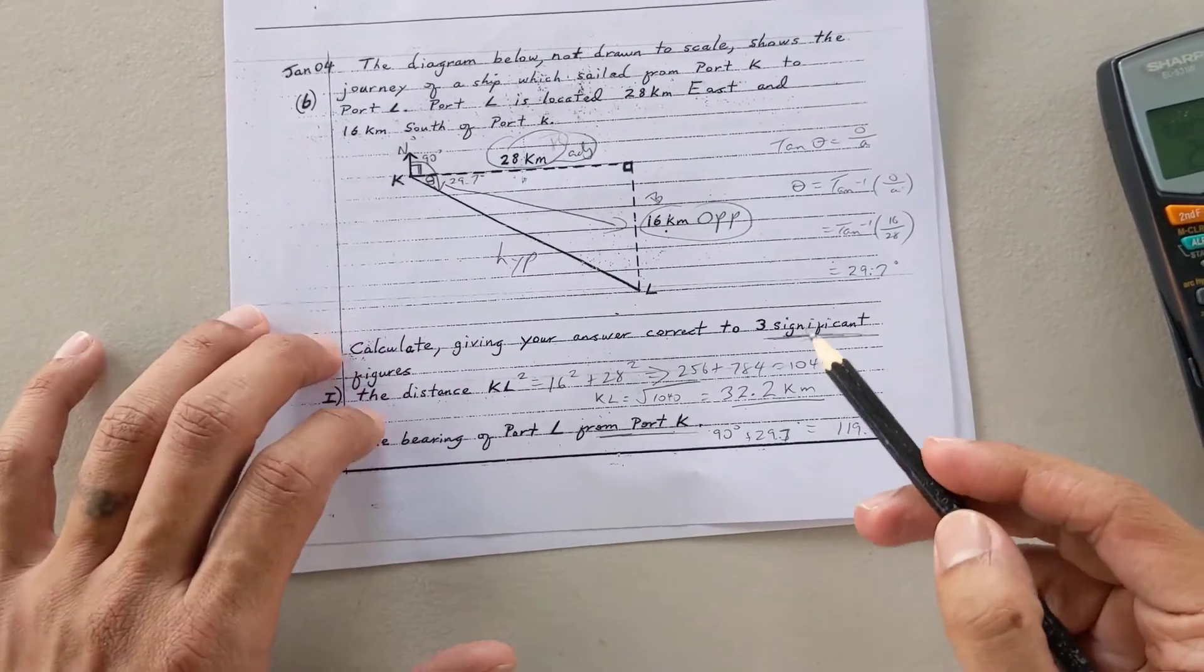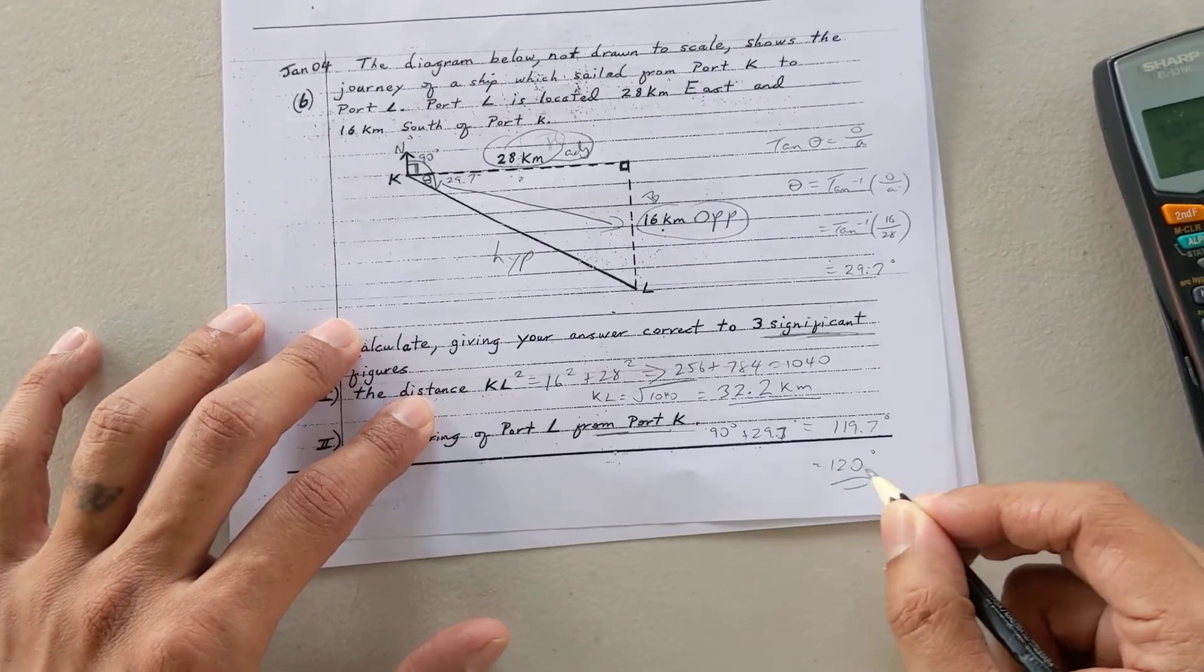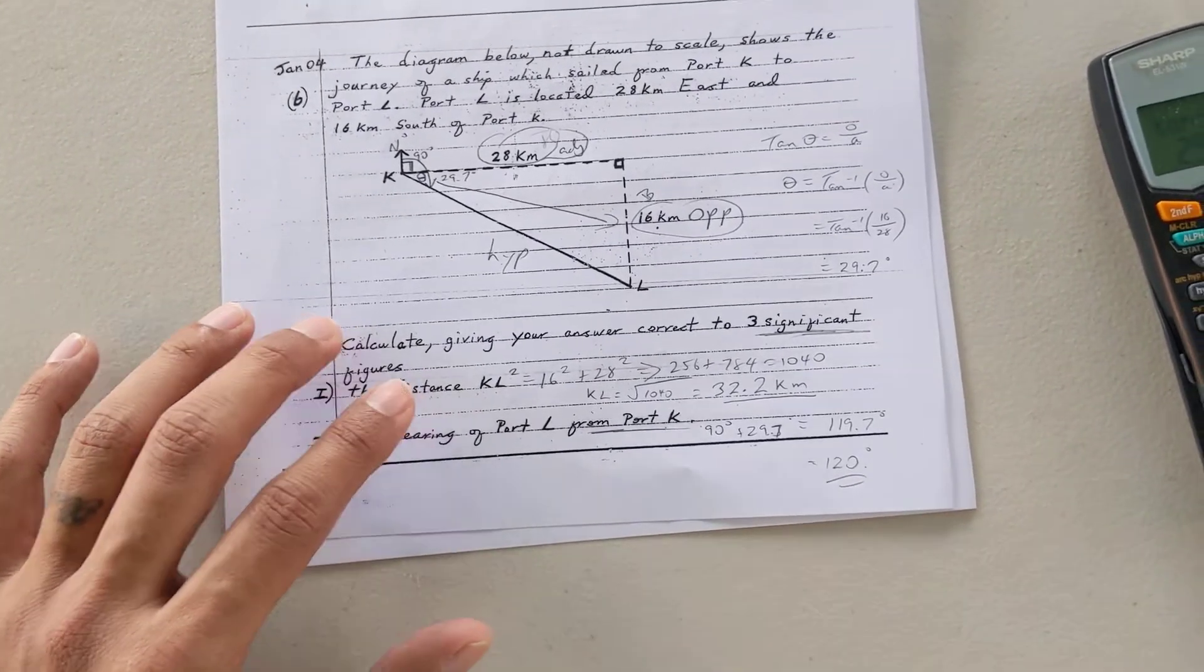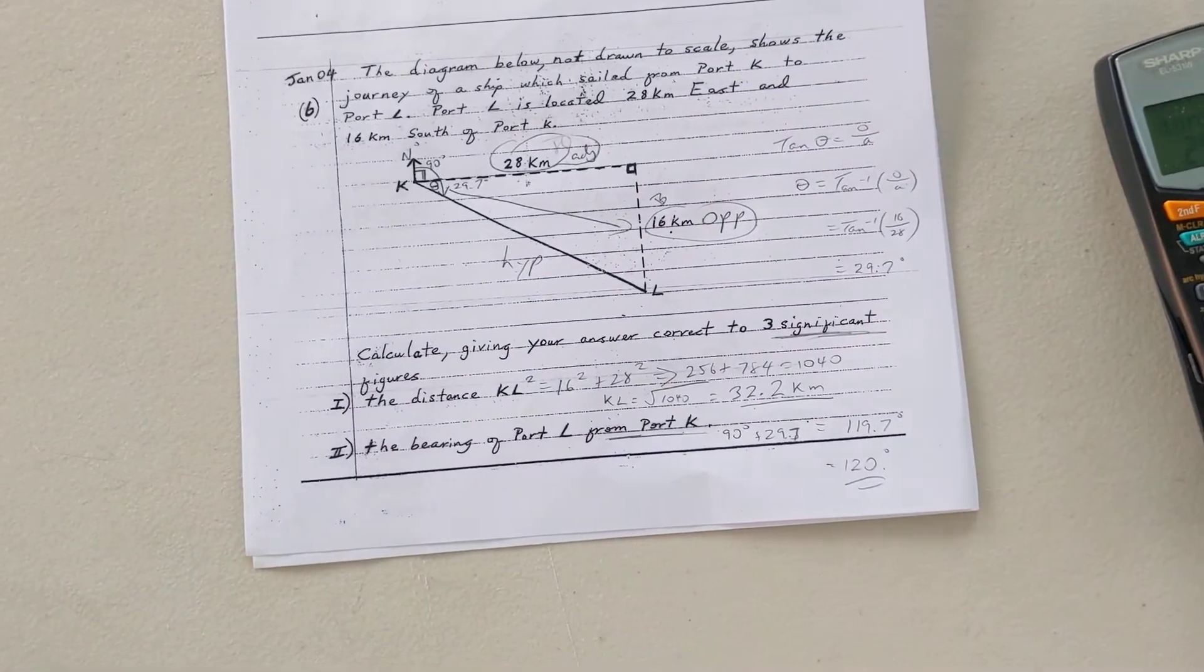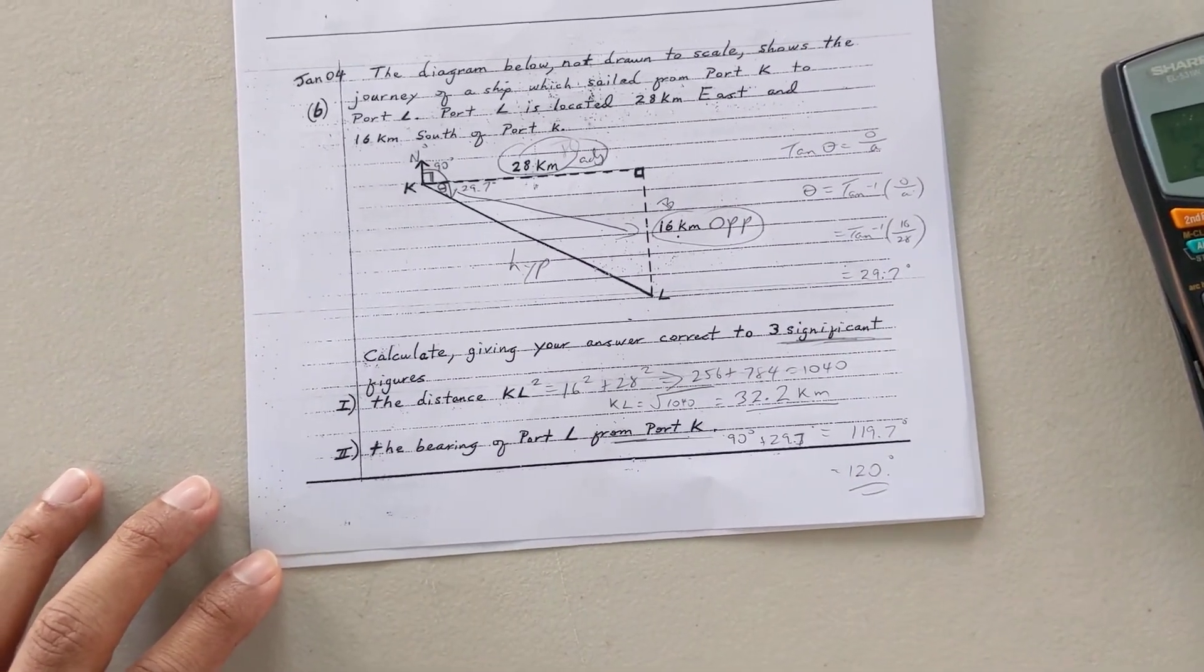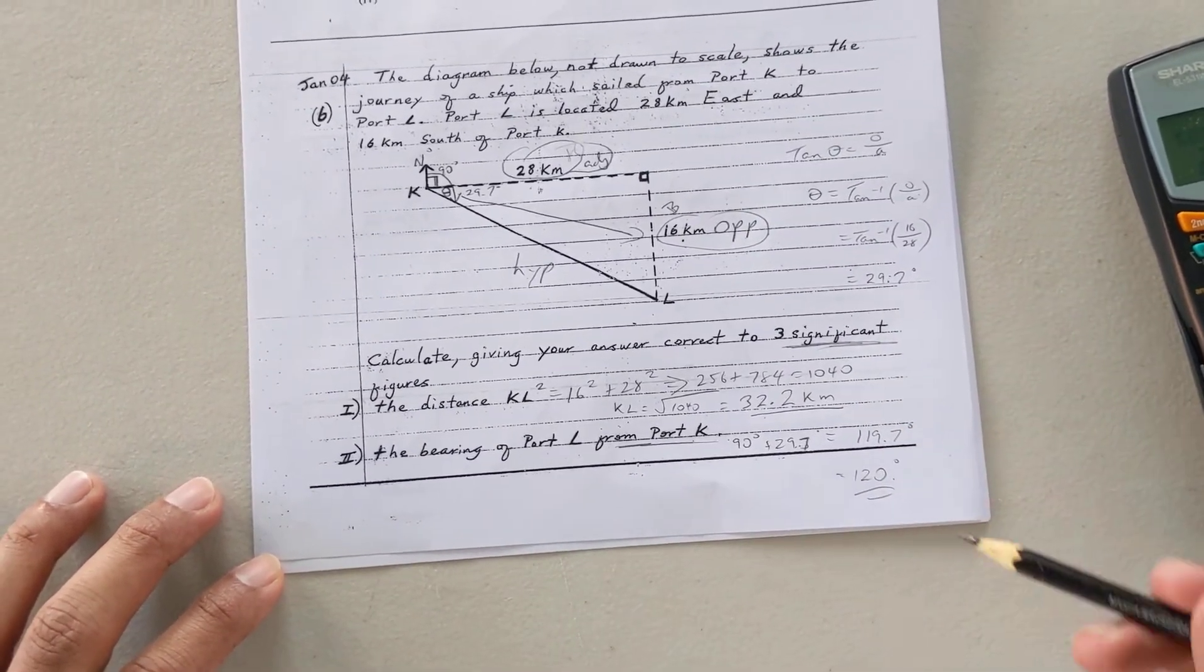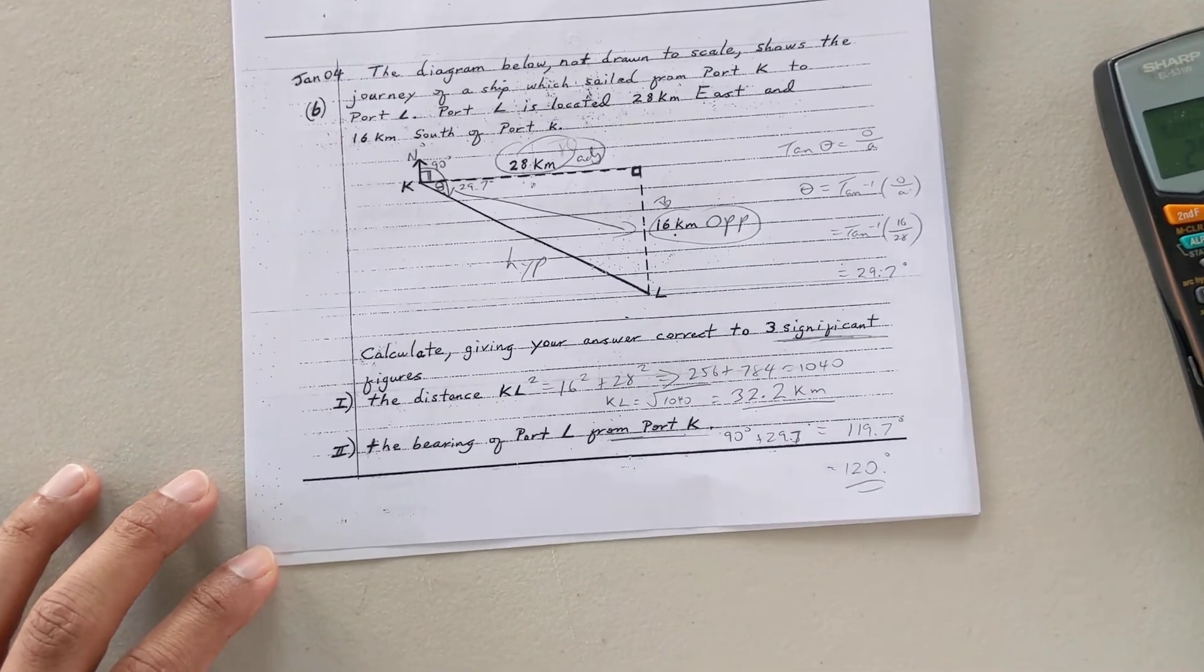However, this is not three significant figures. So when I round it off, I still get it to the nearest whole number, which is 120 degrees. So again, I told you angles normally round off to the nearest whole number. Lengths to one decimal place. But they would state. Even though they say three significant figures, it's still worked out to the nearest whole number for angles and one decimal place.